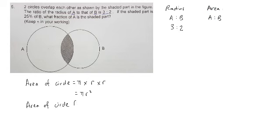Area of circle A equals to π multiplied by 3 multiplied by 3, equals to 9π.